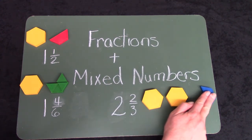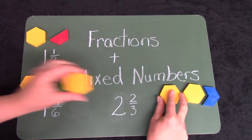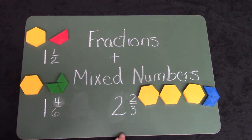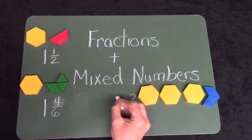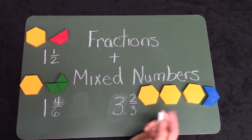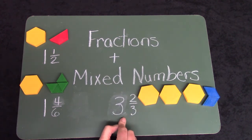What if I wiggled some room here and added another one? Which number is going to change? Is it my whole number or my fraction? Yes, it's my whole number. I now have one, two, three, and two thirds hexagons.